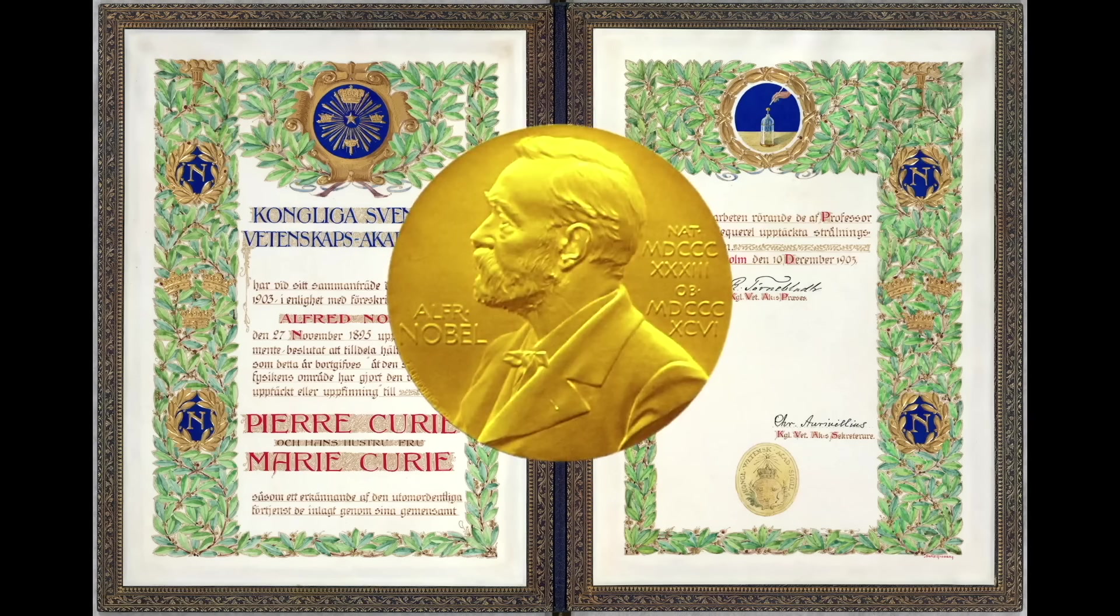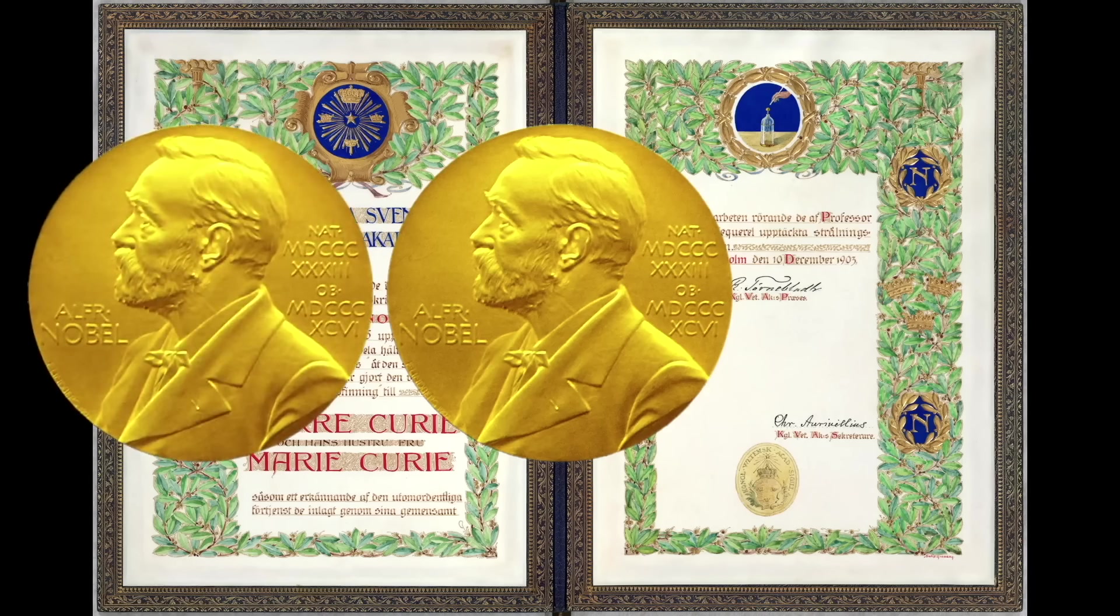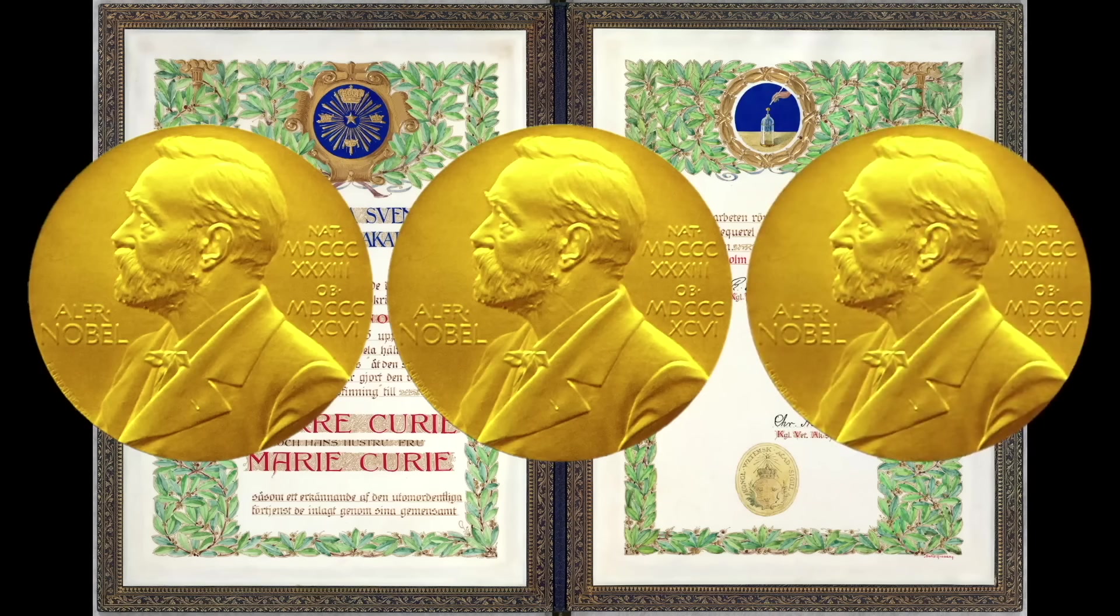Interestingly, the Curie's daughter, Irene, married Frédéric Joliot, and they were the recipients of the Nobel Prize for Chemistry in 1935. The Curie's other daughter, Eve, married a diplomat who became the director of the United Nations Children's Fund, and he received the Nobel Peace Prize in 1965. Quite a family!